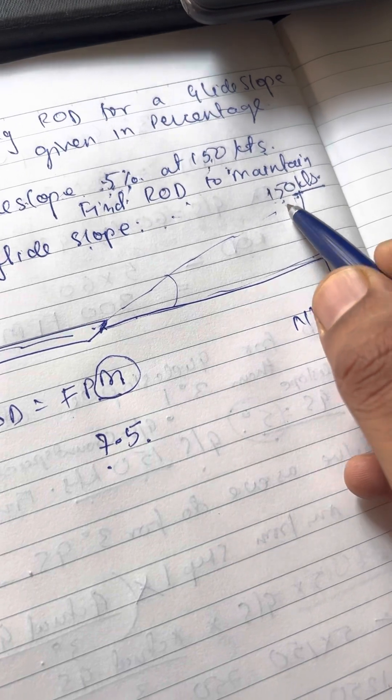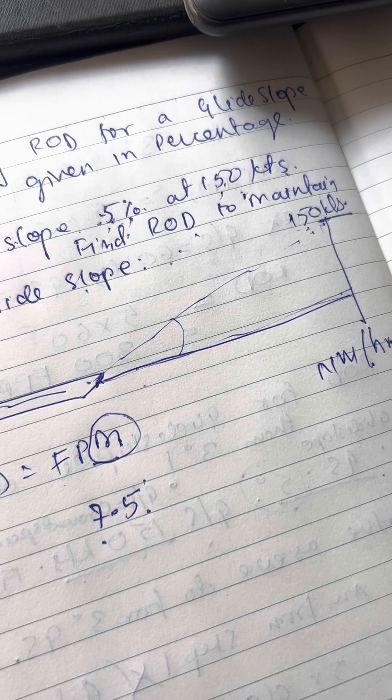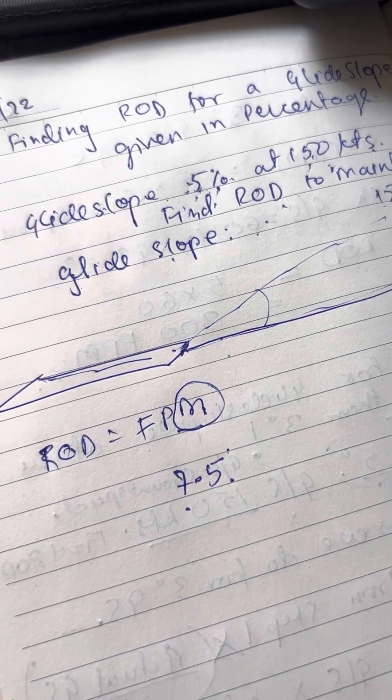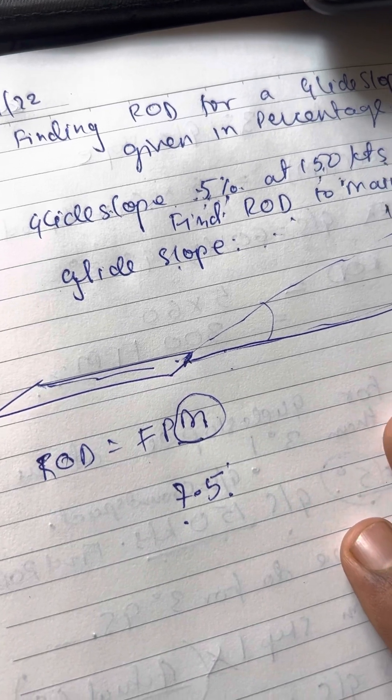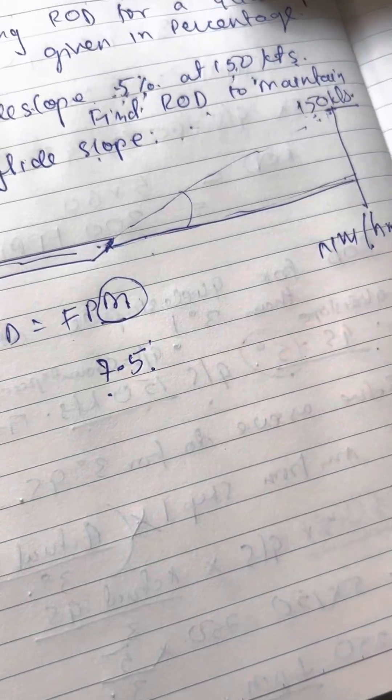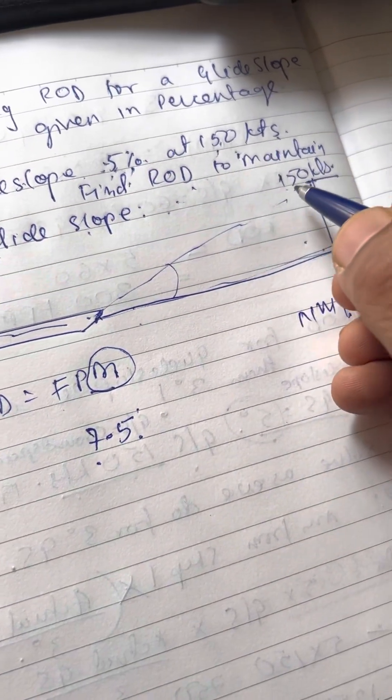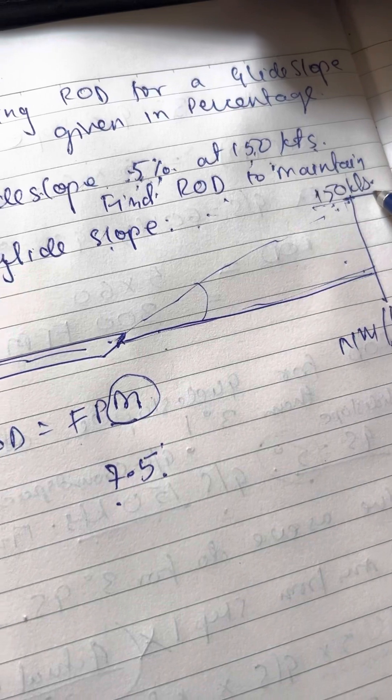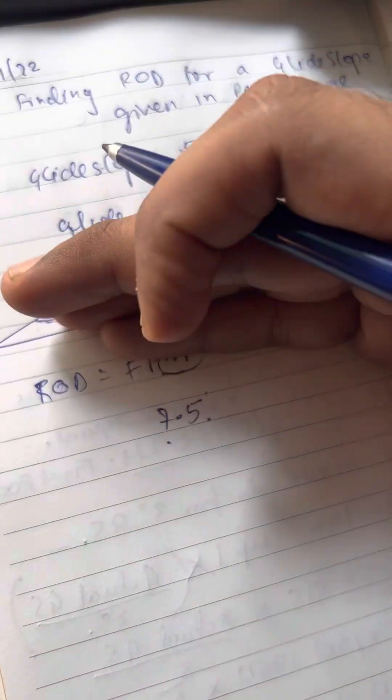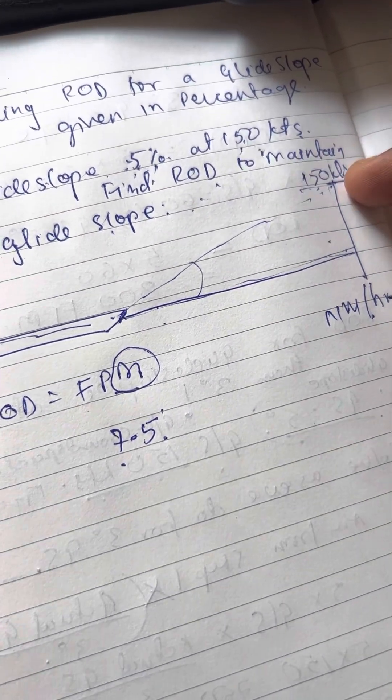All right. But what is the meaning of 7.5? Here, what is the meaning of 7.5%? Okay, so here with respect to ROD, the meaning is for every 150 knots, for every 150 knots you go forward horizontally. That is for every, I would say, at this speed.